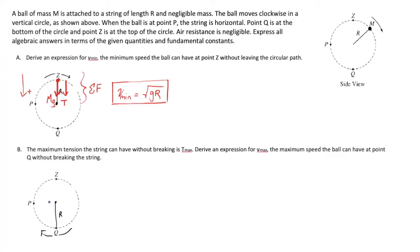In part b, we flip the script. The maximum tension the string can have without breaking is t_max. Derive an expression for v_max, the maximum speed the ball can have at point q, the bottom, without breaking the string. Let's make a general setup. Free body diagram time. As usual, I expect pointing down will be my familiar mg, force of gravity.